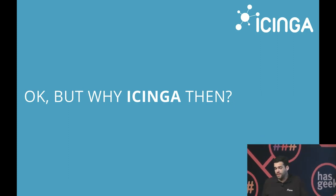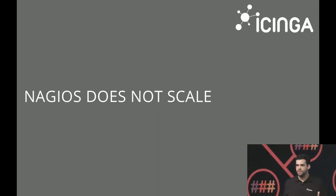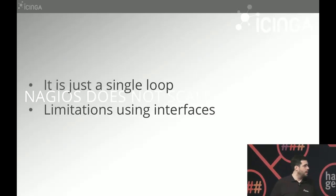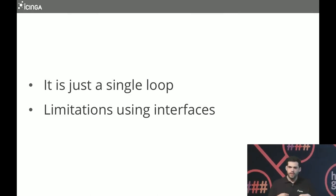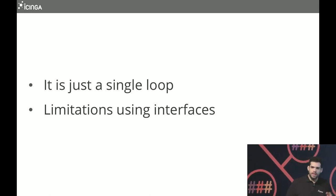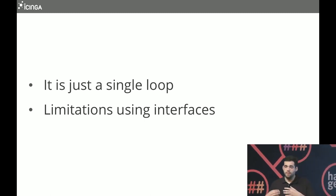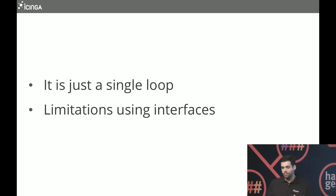So why Icinga then, if Nagios is so good? One thing: Nagios does not scale. If you have Nagios on a single box, you see one CPU burning while the others do nothing, because it's just a single simple loop — and that's a big issue. There are add-ons where you can spread the load or split configuration to a couple of nodes, but this is a fundamental problem in Nagios's basic concept. This also causes issues when sending passive data or commands to Nagios under heavy load — it stops working.